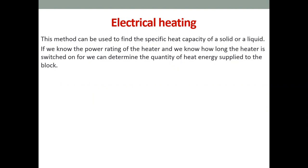The first method is electrical heating. This method can be used to find the specific heat capacity of a solid or liquid — it cannot be applied to a gas. If you know the power rating of the heater, you switch on the heater and determine the specific heat capacity of the object.